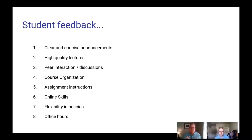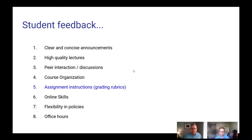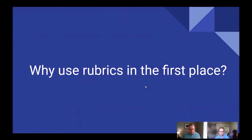Here are eight themes that emerged — eight ideas students suggested that would help them to be more successful in the remote teaching environment: clear and concise announcements from faculty, high quality lectures, good peer interaction and discussions, course organization, assignment instructions, online skills development, flexibility in policies, and office hours. That fifth one — assignment instructions — was something students talked about, specifically that grading rubrics are especially helpful when you're remote and may not have as much access to ask questions of the faculty member.